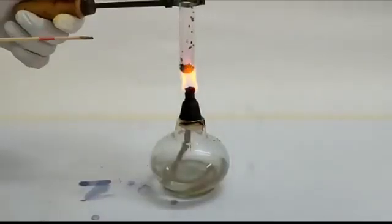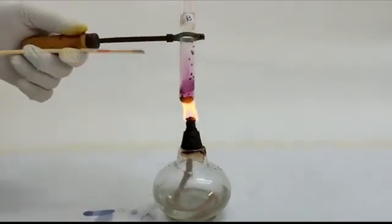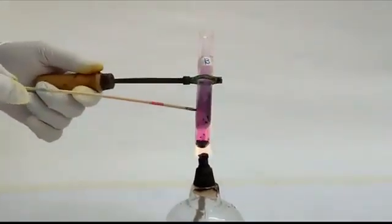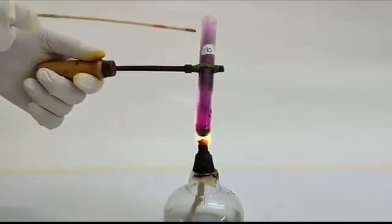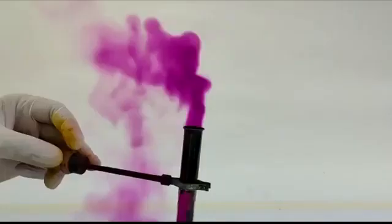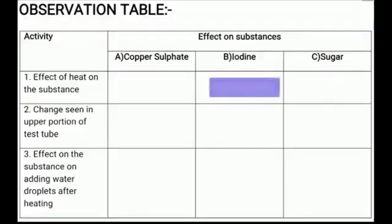In this activity B, let's heat Iodine given in test tube B. Observe the effect of heat and note down the observation in the given table.